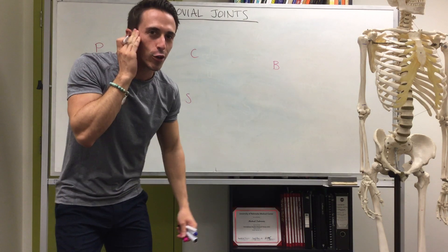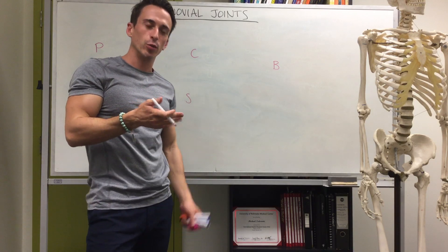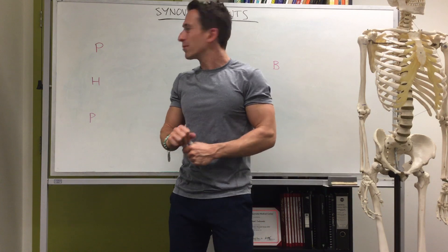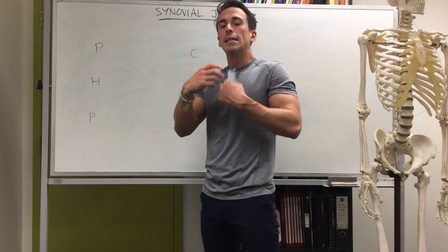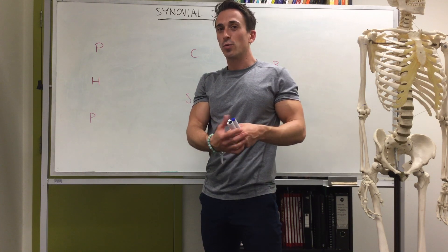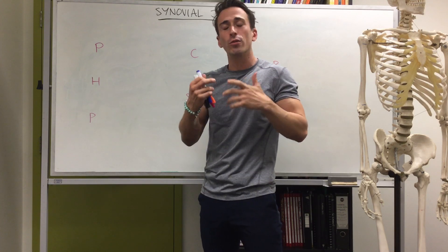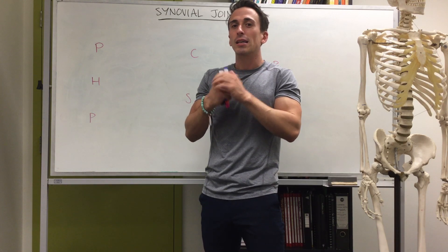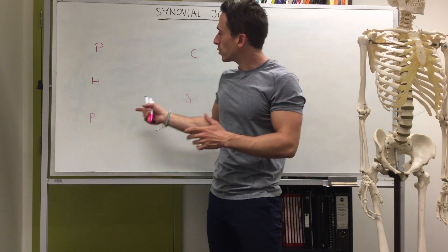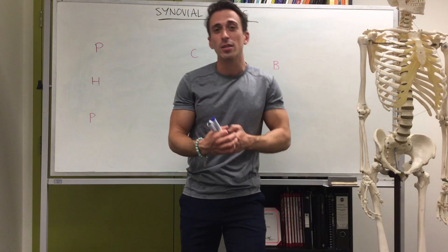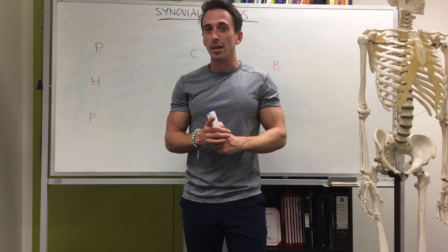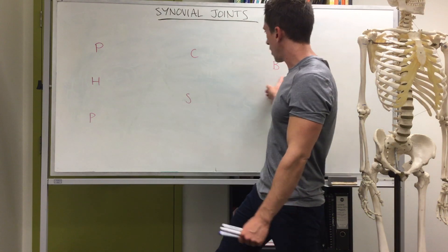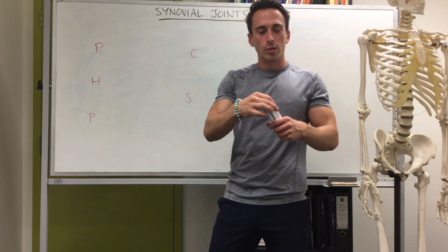I have a mnemonic for the synovial joints — a mnemonic takes the first letter of every word and attributes it a word that's easier to remember than simply saying planar, hinge, pivot, and so forth. I usually share the mnemonic, like 'Oh oh oh to touch and feel very good velvet are heaven' for the 12 cranial nerves. Unfortunately this one I can't share — it's too inappropriate — so this is a good opportunity for you to create your own mnemonic.